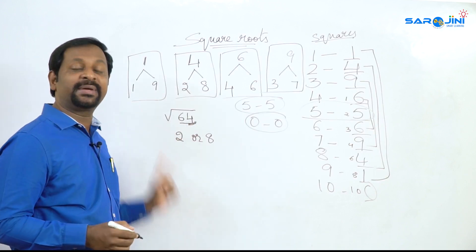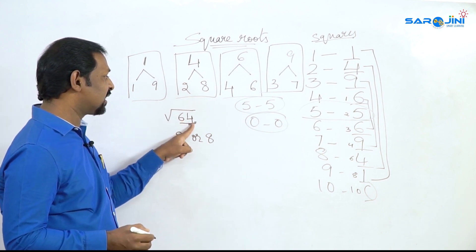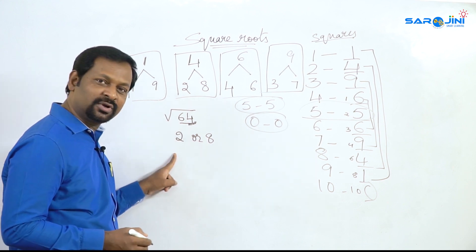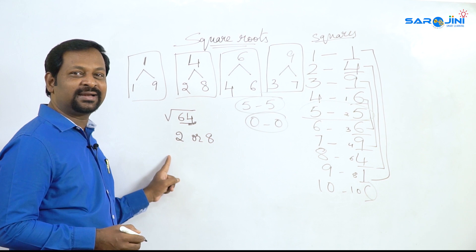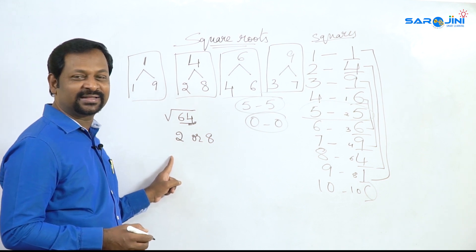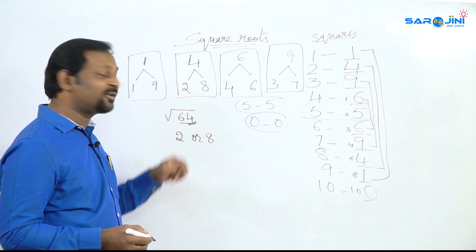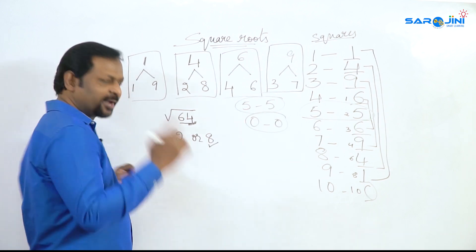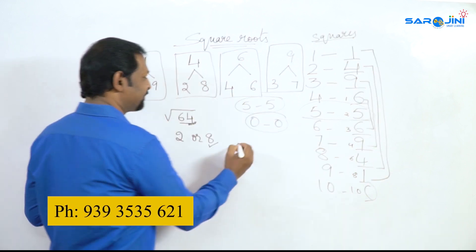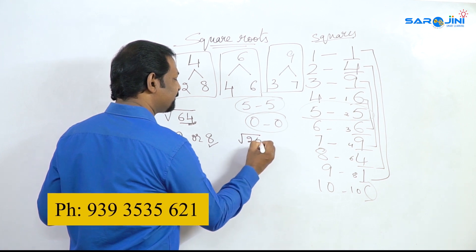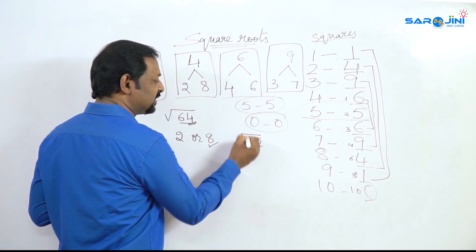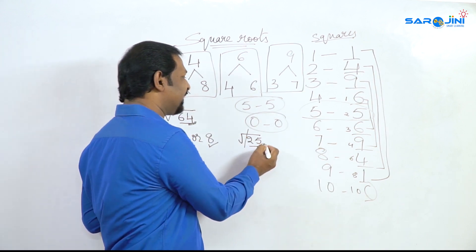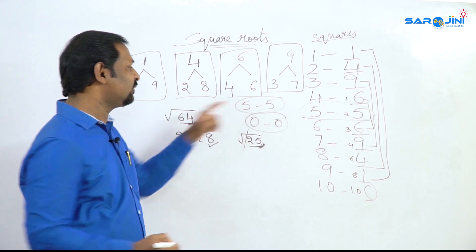So the second part gives us 4, and the combinations are 2 and 8. Since 64 has only two digits, the first part has no number — leave it. So if the answer is 2, then 2 into 2 is 4, but if it is 8, then 8 into 8 is 64. So the answer is 8. Now, root 25: the unit digit is 5, so 5 will remain 5. The answer is 5.